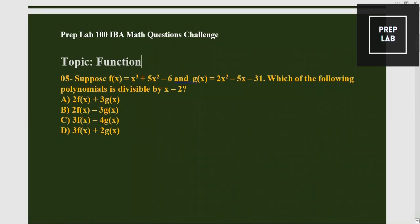You must see this is a past paper question from IBA. So let's read it out. Suppose f(x) is a function x³ + 5x² - 6x, and then the second function which is g(x) = 2x² - 5x - 31. Then they are asking which of the following polynomials is